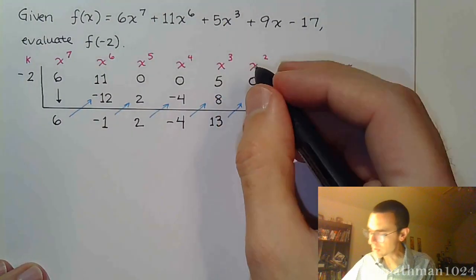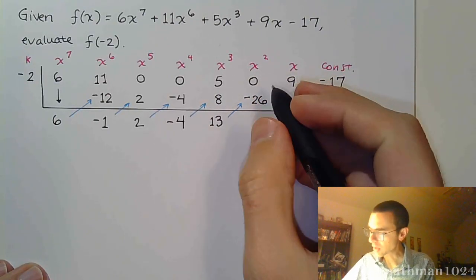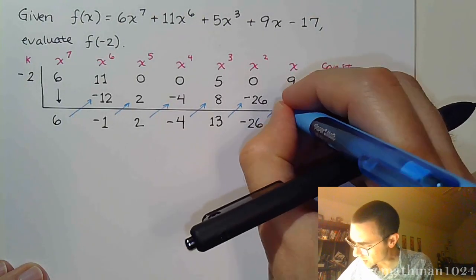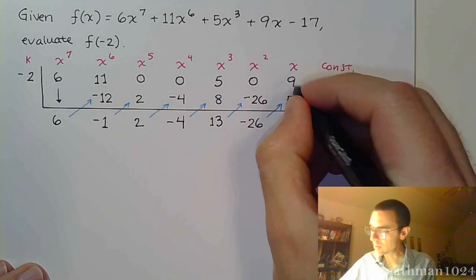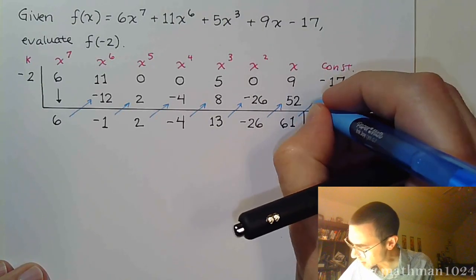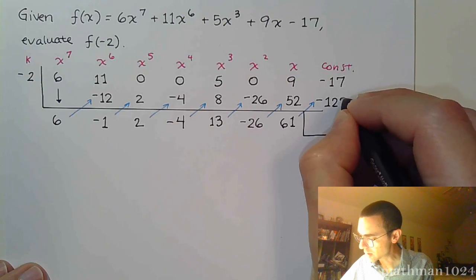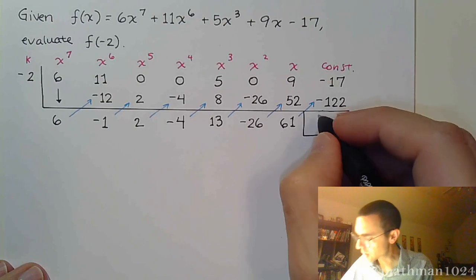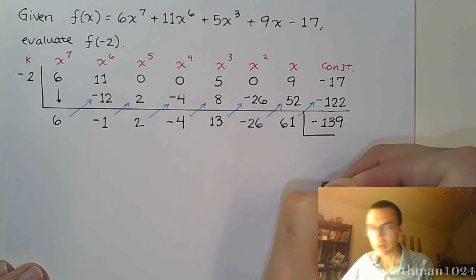Multiply times negative 2, we get negative 26. Plus 0 is negative 26. Times negative 2 — man, I feel like this one's going on forever — 52. Add these guys and we get 61. Multiply times negative 2 one last time, that's negative 122. Combining negative 17 and negative 122, we get negative 139.